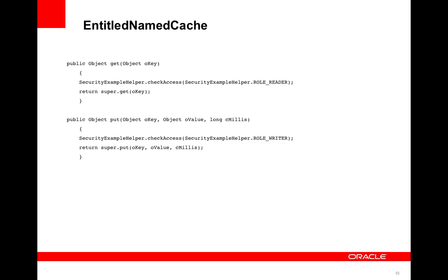The entitled named cache has access to all the different methods. These are running on the proxy side, and based on the identity transformer and the identity asserter, you've now produced an identity and that will be in the context. So you can check access — you will know that you'll be running within the context of that subject.